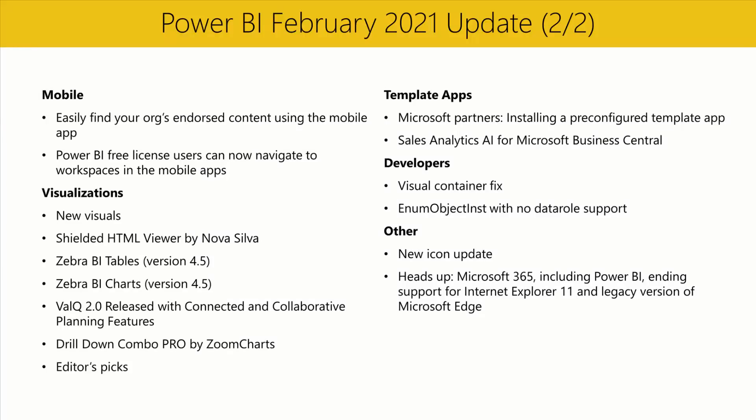In the developers section, we're fixing an interaction between some custom visuals and visual containers where custom visuals didn't fully support customized series — the fix is now available in service and desktop. With the 3.6 API release, we're also allowing Power BI Visuals to receive updates from Power BI without the need to bind any data. To use this feature, a visual needs to use the 3.6.0 version of the Power BI Visuals API and have both 'Supports Landing Page' and 'Supports Empty Data View' set to true.